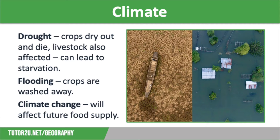Some regions in Africa have suffered from drought for many years, for example the Sahel, just south of the Sahara Desert. Long periods of drought can lead to the process of desertification, whereby previously fertile land turns into arid desert.